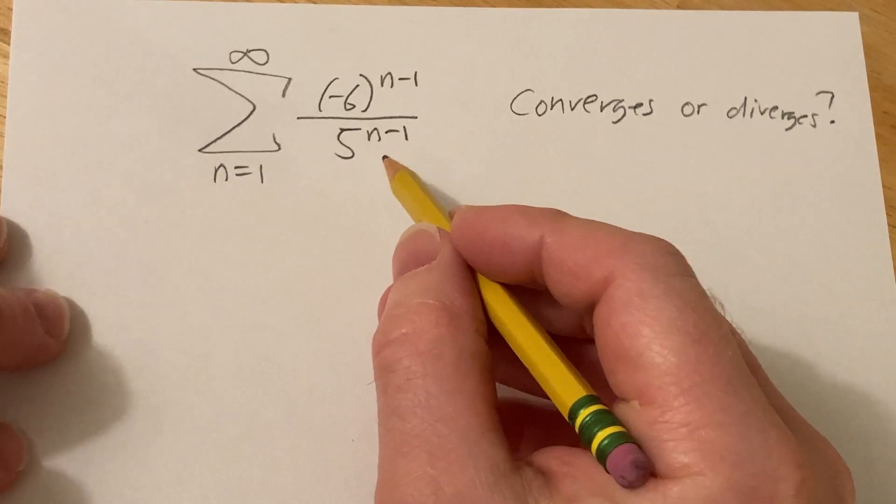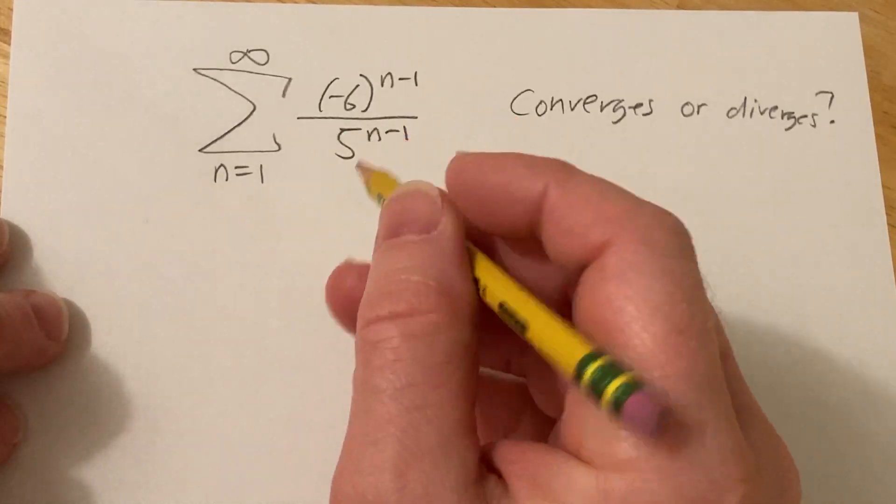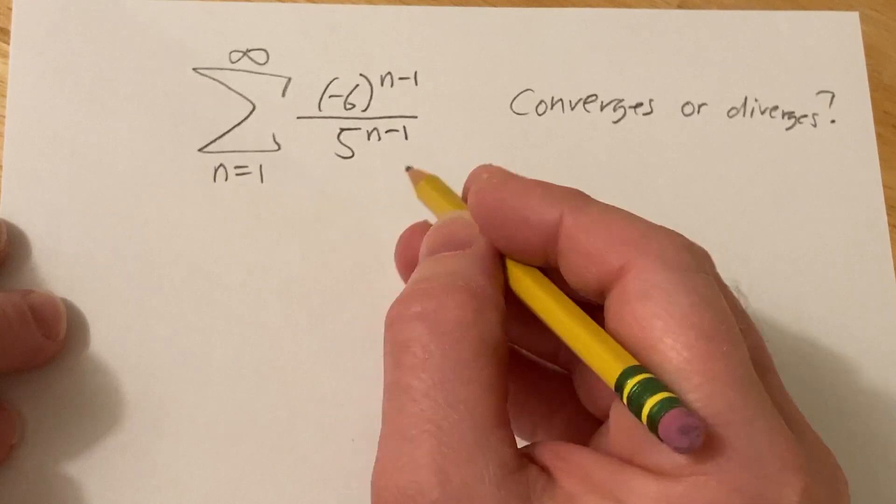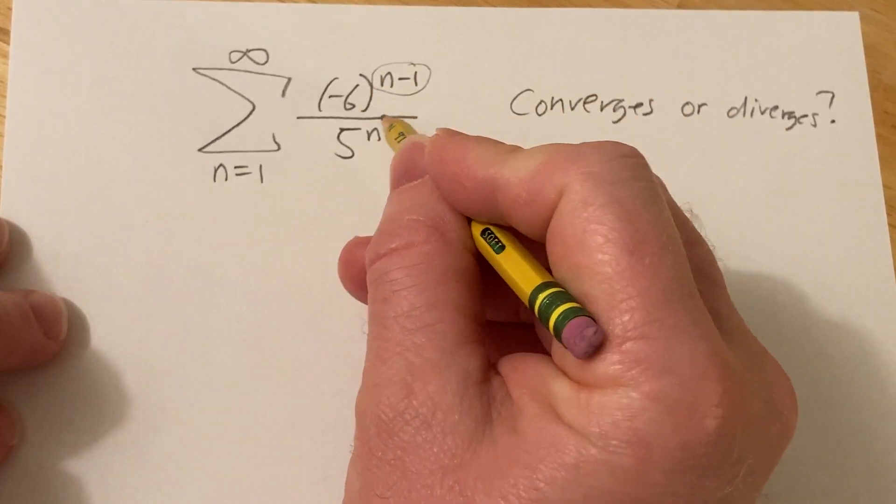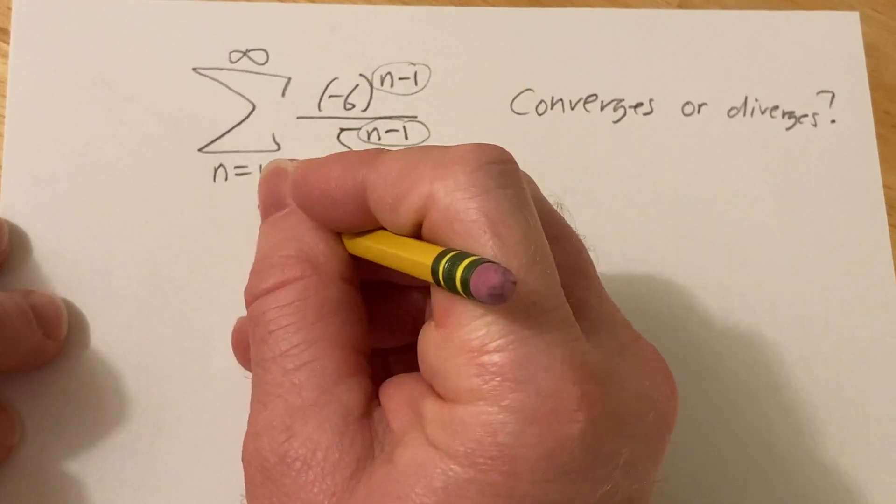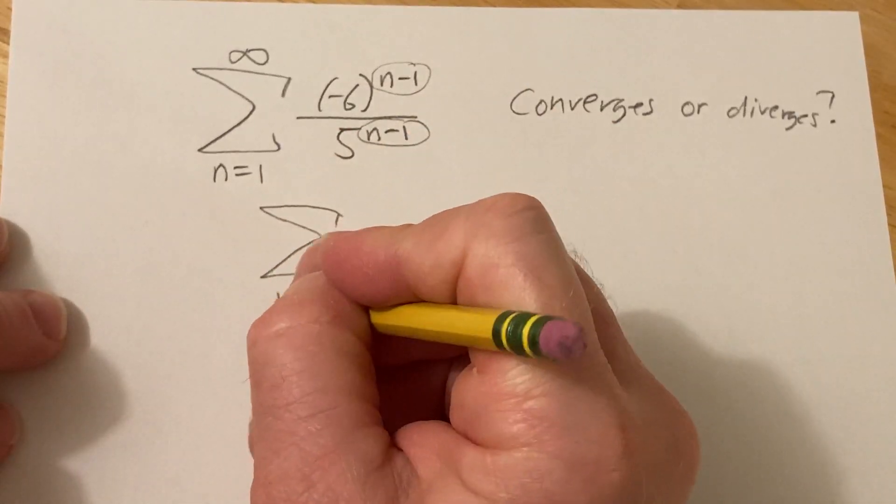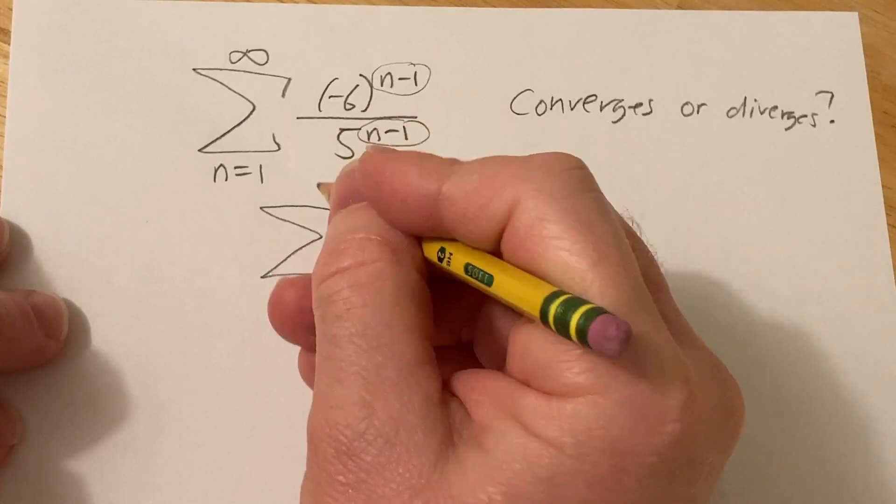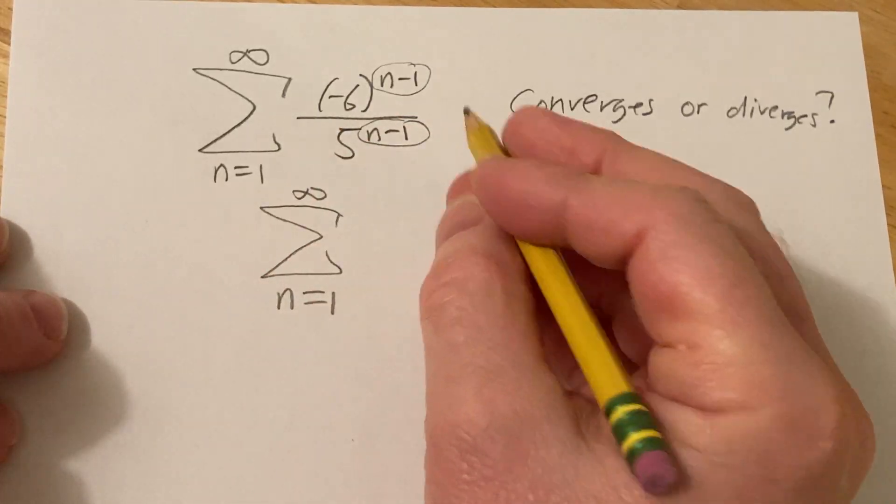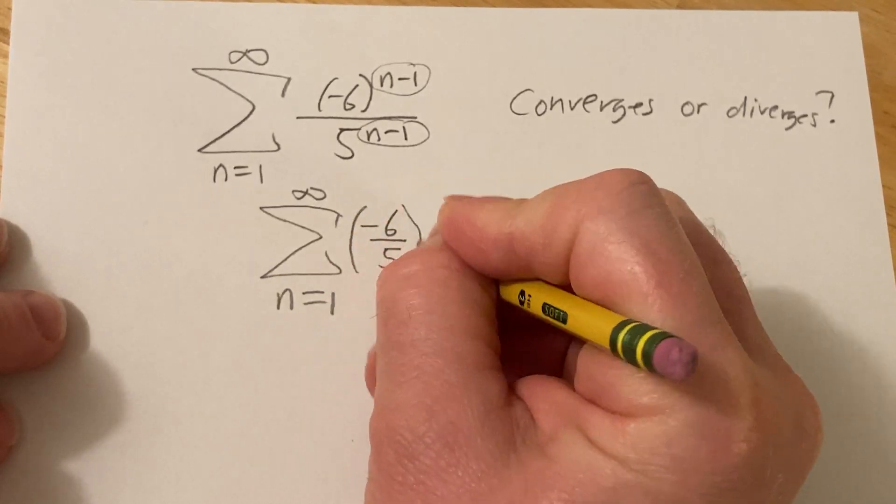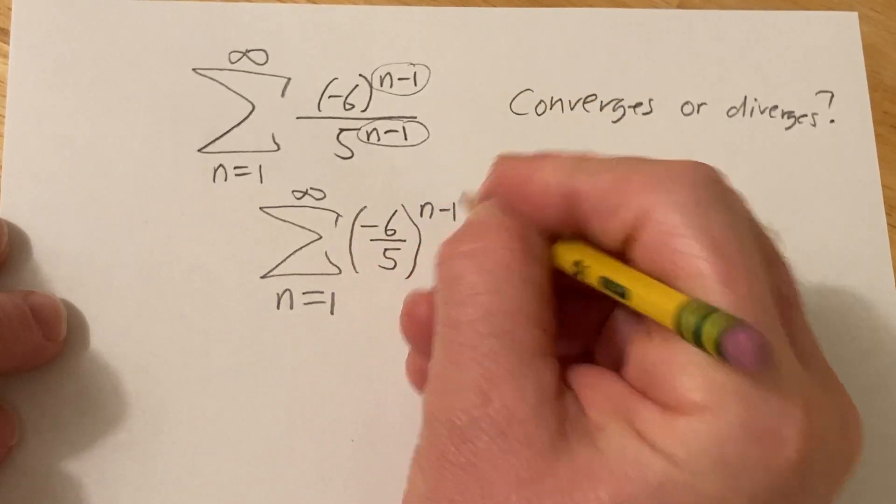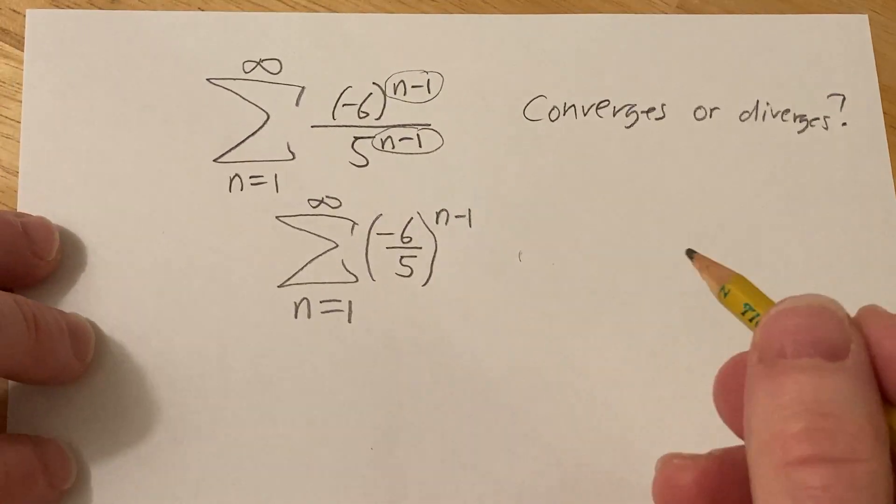So this looks like it might be geometric, so let's go ahead and write it in that way, and then I'll explain what that is. You'll notice there's an n-1 here and there's an n-1 here. So what we can do is write it as follows. We have the sum from 1 to infinity of negative 6 over 5, and then you can write the whole thing to the n-1. And basically this is geometric.